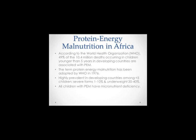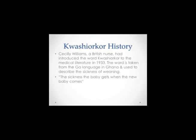PEM in Africa. The term protein energy malnutrition was adopted by the World Health Organization in 1976, and according to the WHO, 49% of the 10.4 million deaths occurring in children younger than 5 years in developing countries are associated with PEM. Highly prevalent in developing countries among children, PEM focuses on infants and people under the age of 5 years old. First, we will look into Kwashiorkor and its history and its emergence into medical health today.